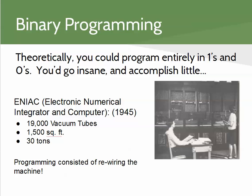Remember from the last module: we could encode everything as ones and zeros, and the ones and zeros represented whether or not electricity was flowing through a transistor or a wire. You could program entirely in ones and zeros if you wanted to — we could write the code required to record this video in ones and zeros. We would definitely go insane and accomplish very little in a vast amount of time, but we could do it.